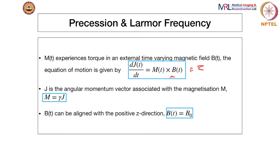We substitute m instead of j. The reason we do this is that in MR imaging, what we want to do is map this M. This M depends on B0, proton density PD, and the other two factors — T1 and T2 relaxation times — that contribute to the contrast. All of this is expressed through M, which is what we are trying to measure as a function of space and time.